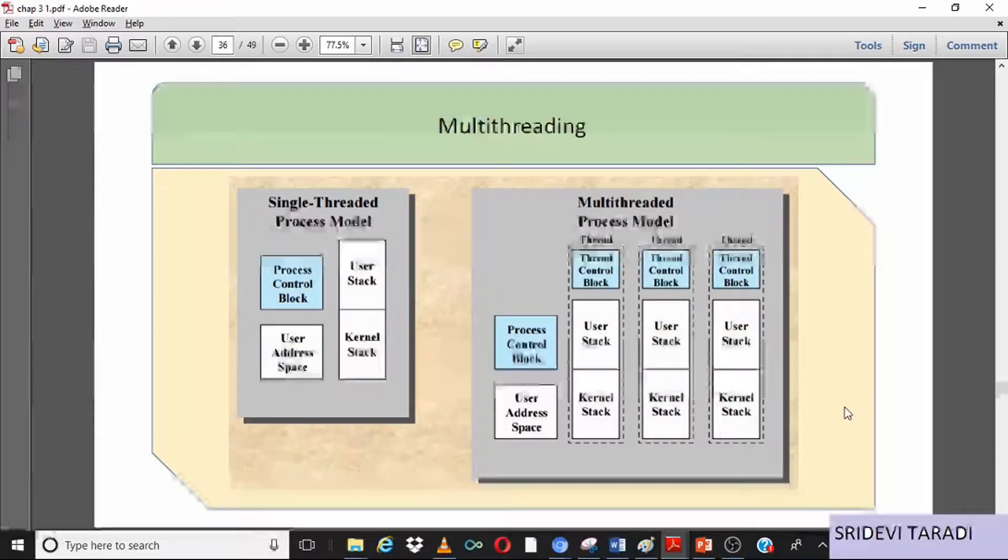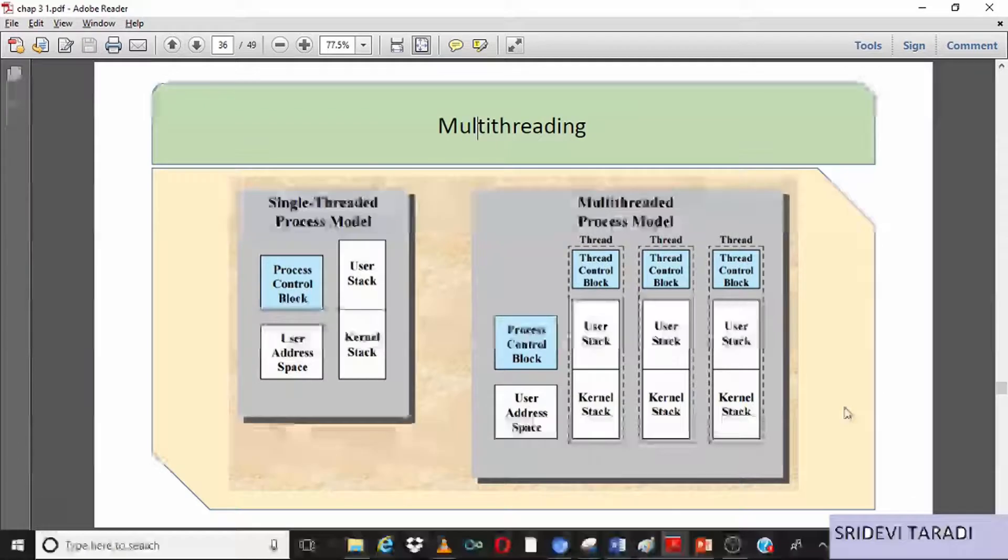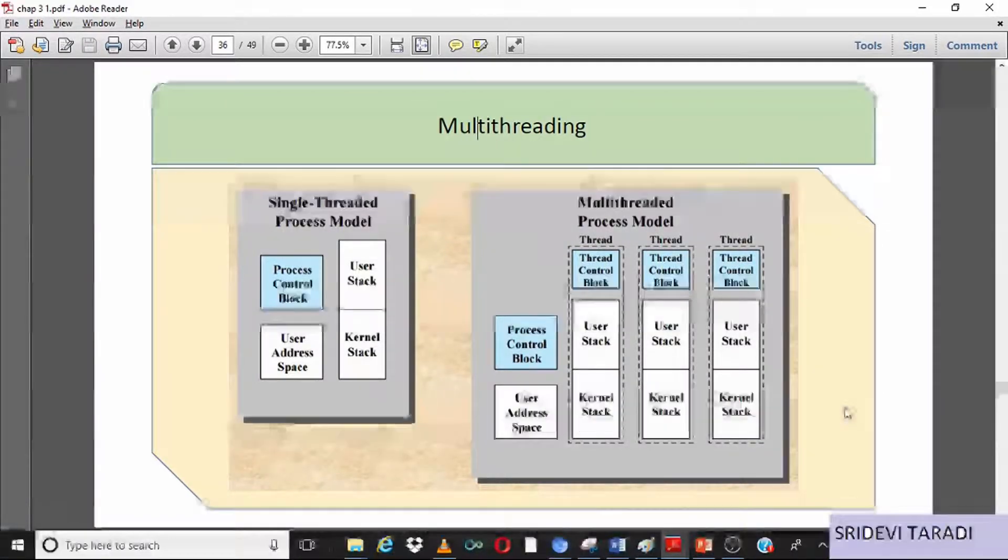Like the PCB used for containing information about the process, the thread control block is a data structure which stores information about the thread. Each thread has a user stack and a kernel stack.